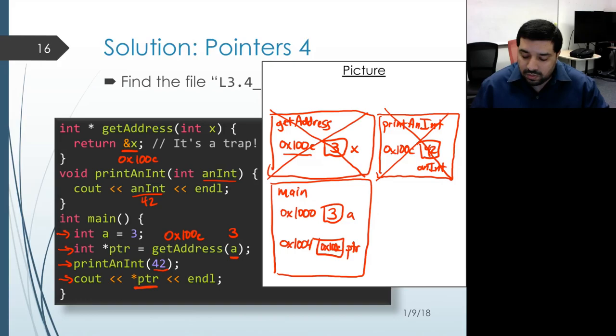And so the most recent value that was located at memory address 1000C is actually that 42 that got placed there when we called printAnInt. So in most implementations, what we would see is that the value 42 would get printed out.